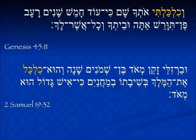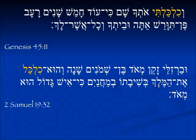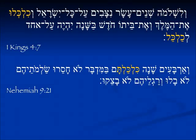Here is a past tense from Genesis 45 where Joseph says v'chilchalti otcha sham ki od chamesh shanim ra'a — conjugated in the past but translated into the future: 'I will provide for you because there are five more years of famine.' In 2 Samuel 19.32, speaking of Barzillai who helped David, v'hu chilkel et hamelech — 'he provided for the king.' In 1 Kings 4.7 we have a third person plural talking about the 12 governors of Solomon who provided for the king.